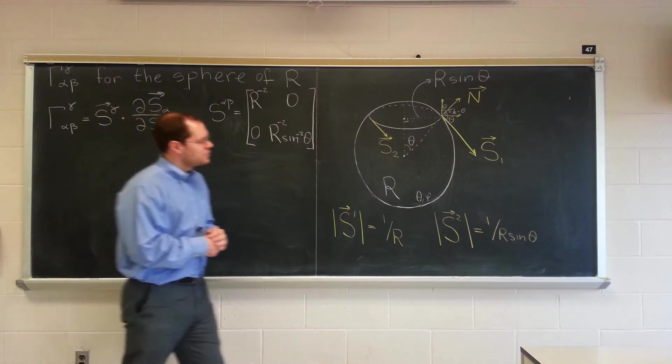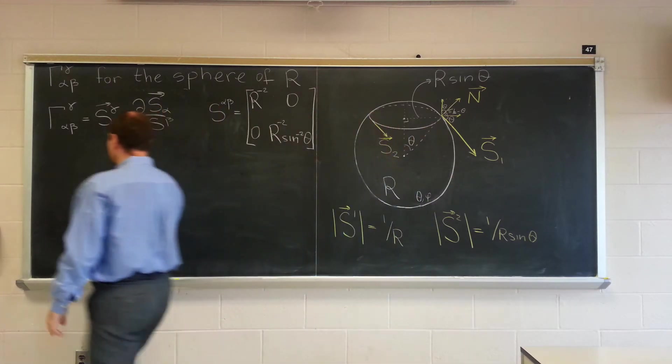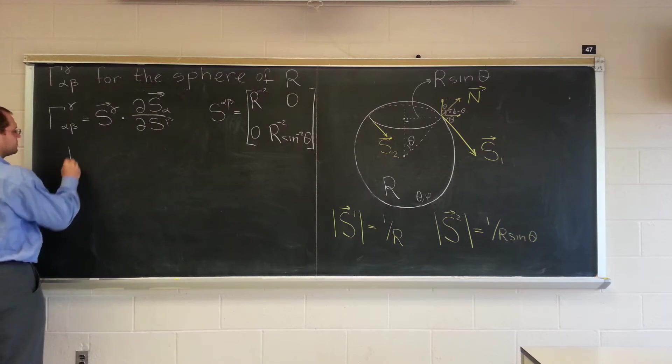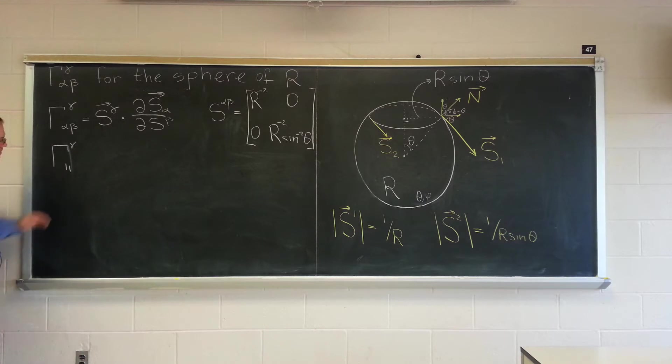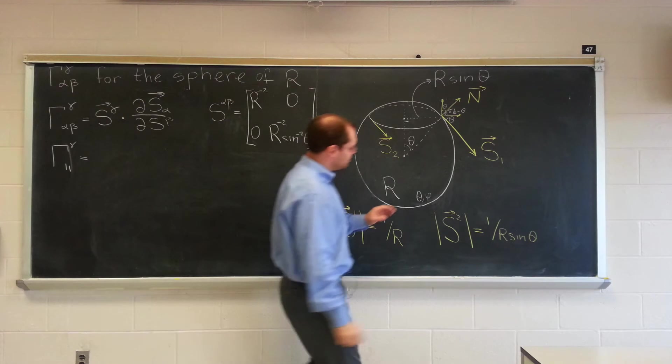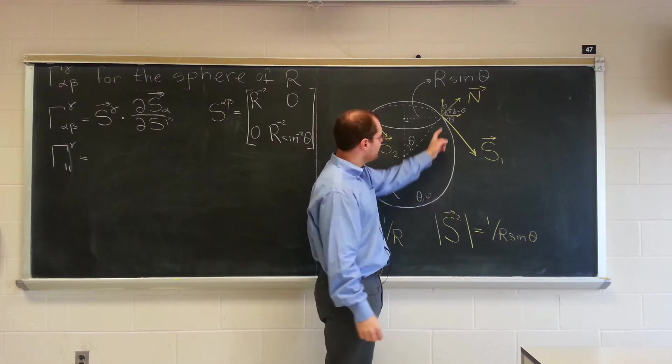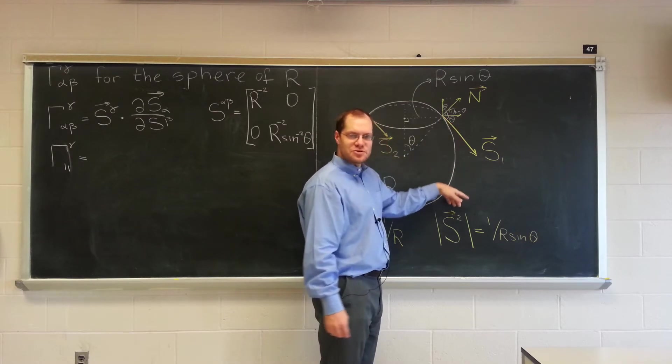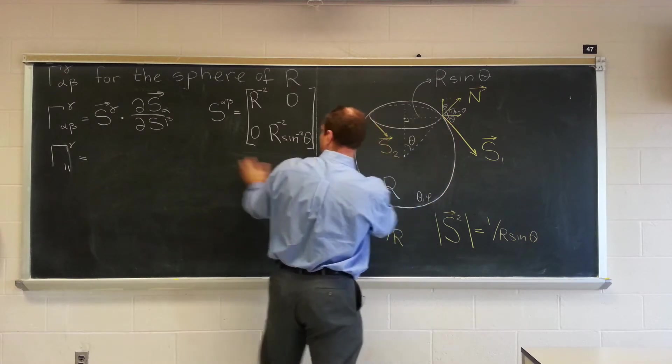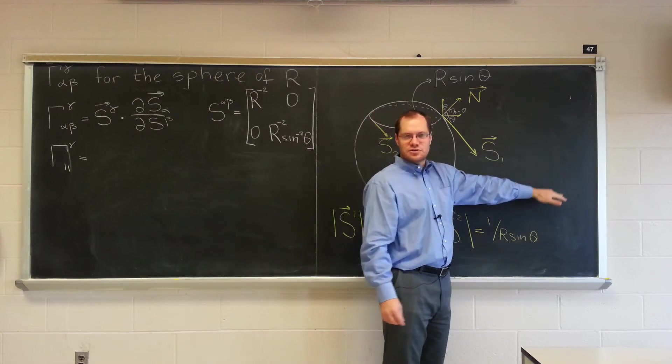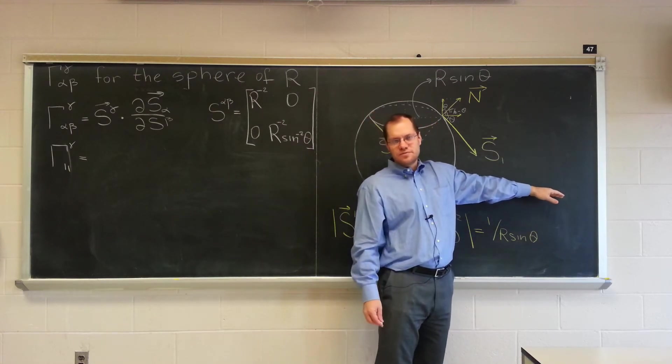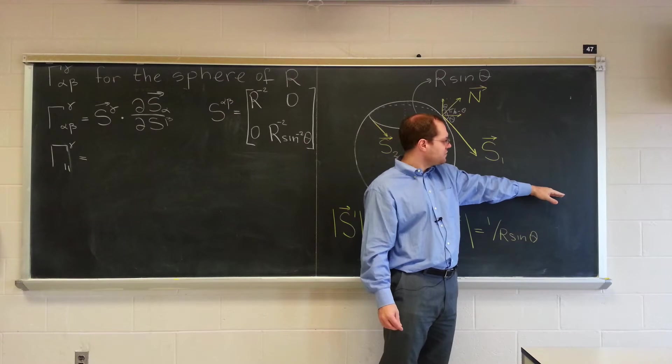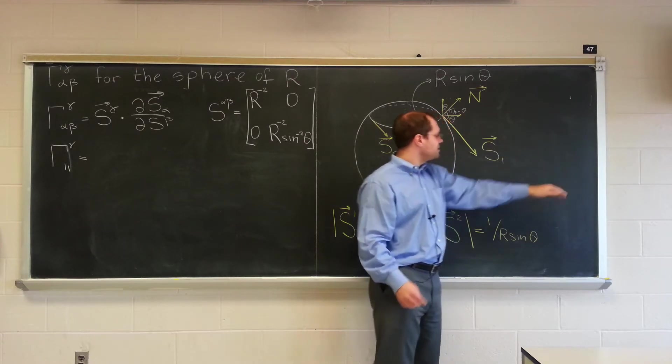Let's start with gamma 1, 1, 1, which has to do with the rate of change of this vector with respect to theta. We'll figure it out here, but then we'll document our non-zero Christoffels. There will be only a few non-zero Christoffel symbols out of eight.